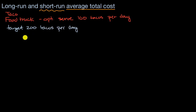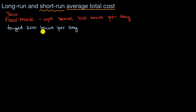In this world, what you would want to do is optimize your fixed cost to minimize your average total cost for 200 tacos per day. Your fixed cost is essentially going to be your food truck, and then you're going to have variable costs — it might be the staff making the tacos, or the supplies for the tacos. And so you might have an average total cost curve that looks like this.